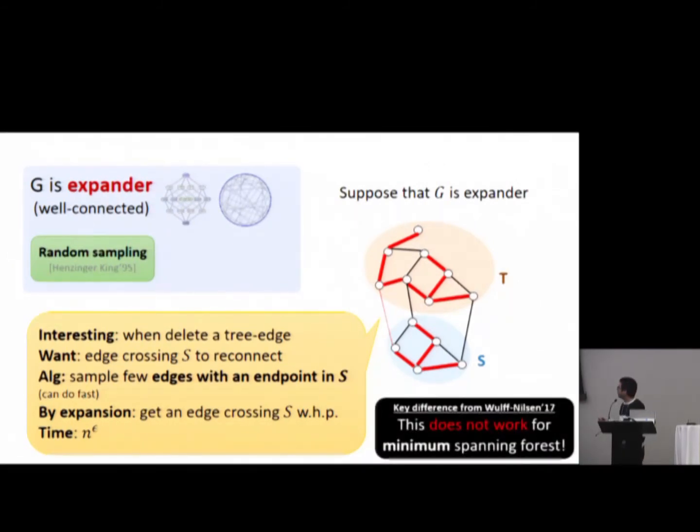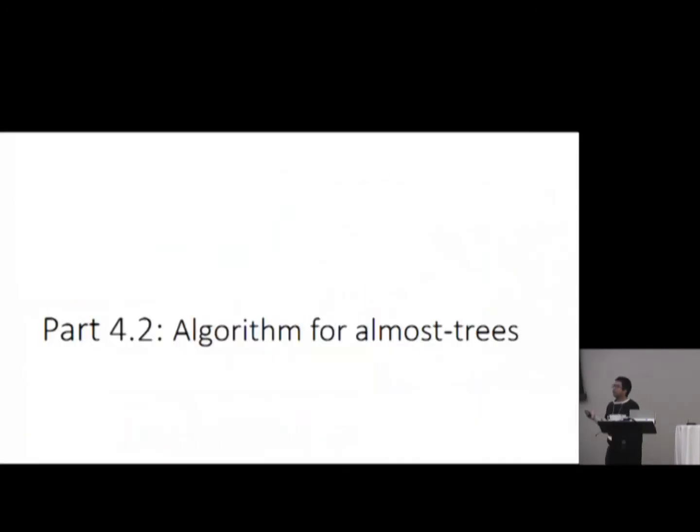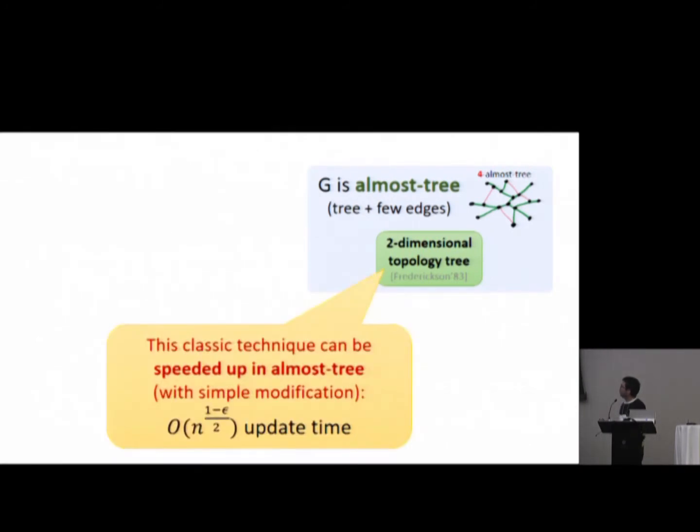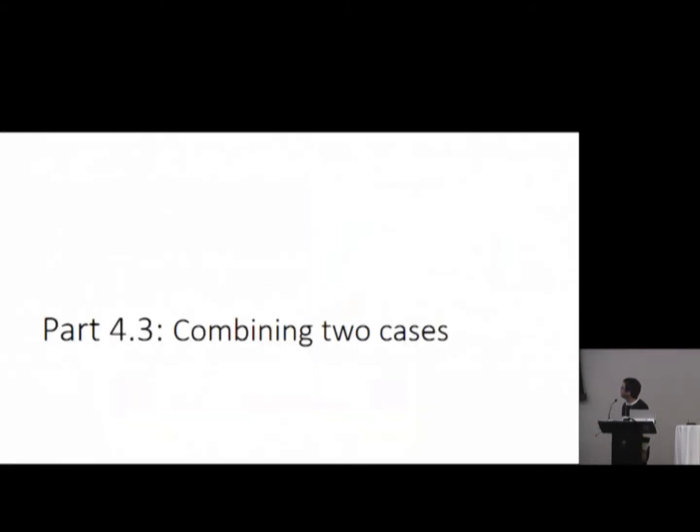You can do it fast here. Just want to say that this approach doesn't work for minimum spanning forest. This is a key difference from our work to Christian's work in the next talk. And the next case, when the graph is almost tree. In this case, I won't go much into details, but I just want to say that there is a classic technique called two-dimensional topology tree by Fredericksen. And this technique can be sped up in almost tree with some modification. It's simple once you understand the technique. And you get something faster than square root n. So we will not worry about this case from now.